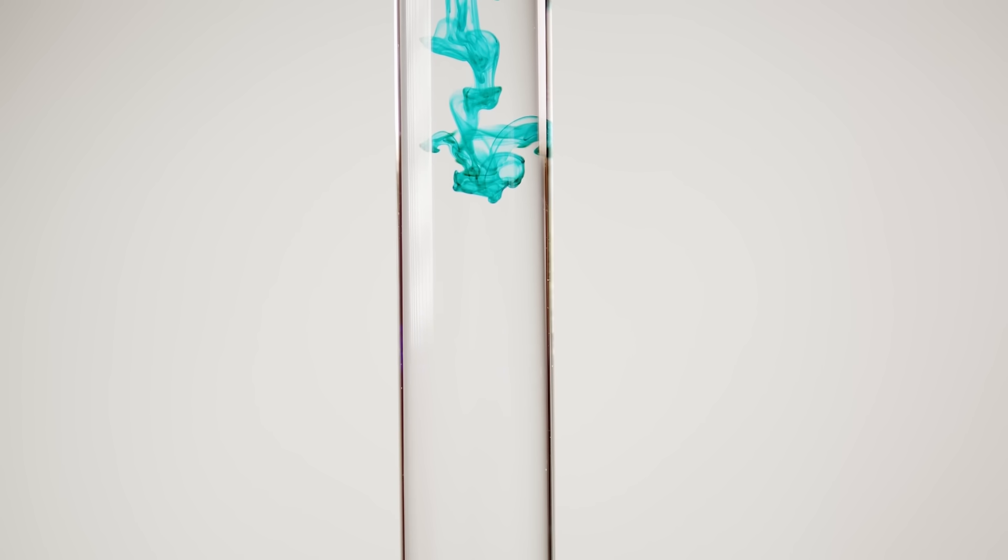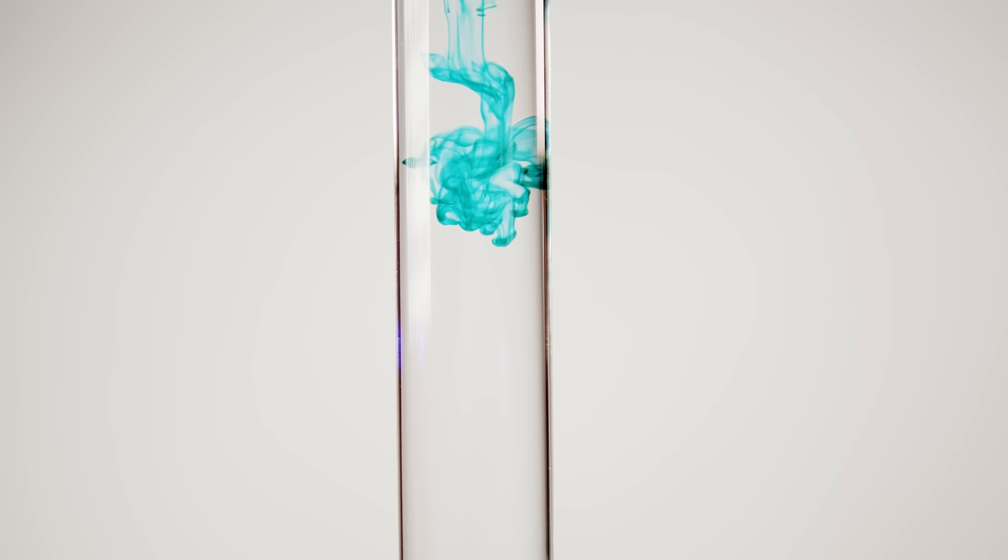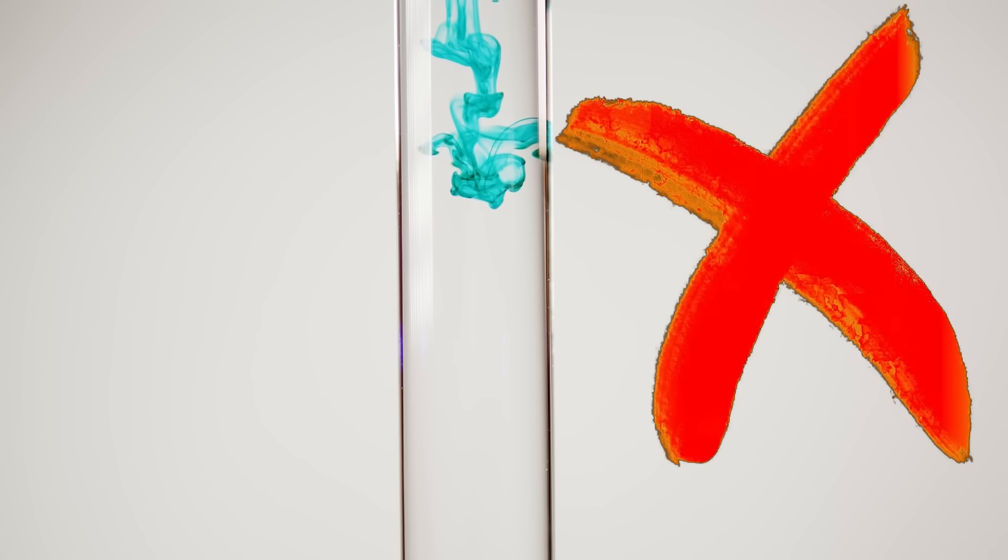Suppose I drip dye into water. The dye will distribute almost evenly. Why? Because this almost perfectly even distribution is the state of maximal entropy. It's the most likely thing to happen, whereas it's very unlikely that the dye goes back into a drop.